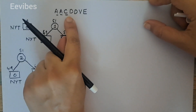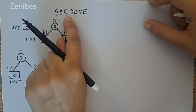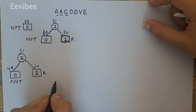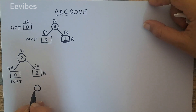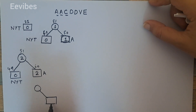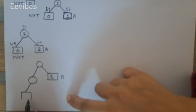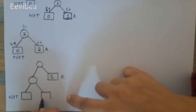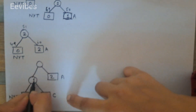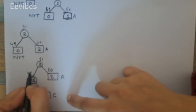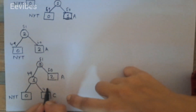The next symbol is 'c', which is new, so the NYT node gives birth to two new nodes: a new NYT node and a node for 'c'. The frequency of 'a' is 2, 'c's weight is 1, NYT weight is 0 — so zero plus one is one, and two plus one is three. Then we assign the node numbers accordingly.